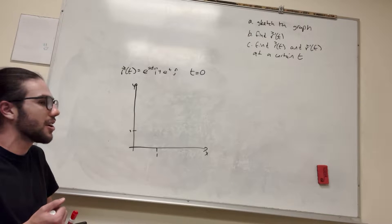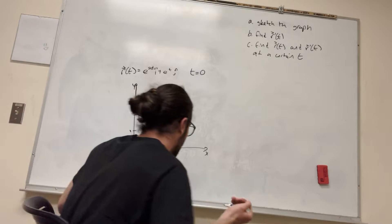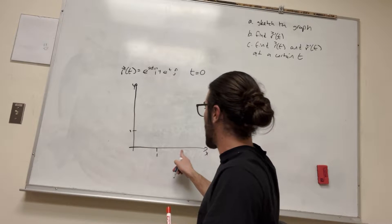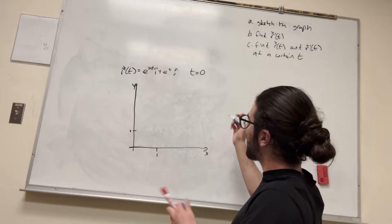It wants us to find it at t is equal to 0, so that's pretty simple. I always like to try to get a good image of what this graph is going to look like first.